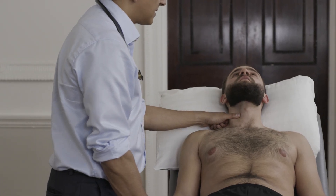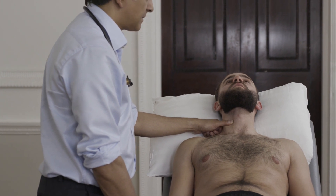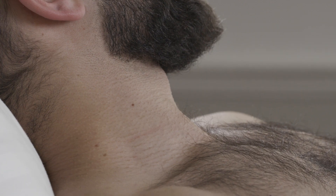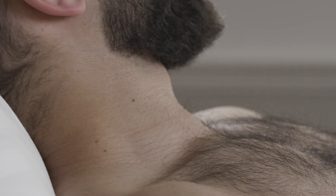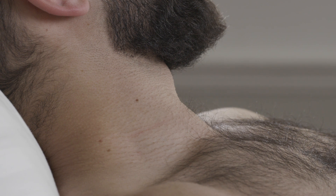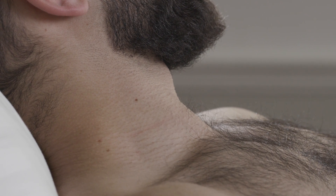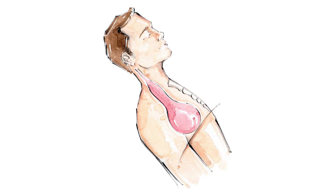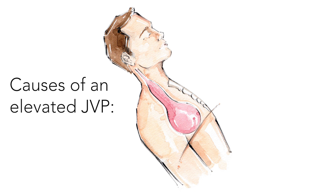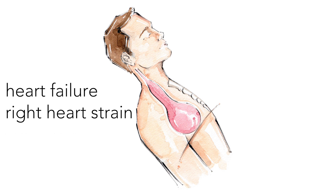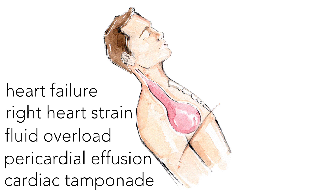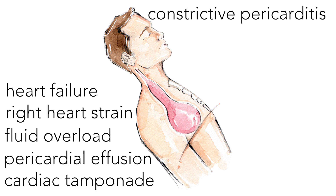Palpate the carotid pulse for volume and character. Position the patient at 45 degrees with the head turned to the left and locate the double waveform pulsation of the JVP between the sternal and clavicular heads of the sternocleidomastoid. The height of the JVP is measured from the sternal angle to the site of pulsation and is normally less than three centimetres. An elevated JVP may be caused by heart failure, right heart strain, fluid overload, pericardial effusion and cardiac tamponade, constrictive pericarditis — where there is a paradoxical rise of the JVP during inspiration known as Kussmaul's sign — and superior vena caval obstruction, where the JVP is elevated but non-pulsatile.